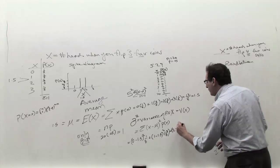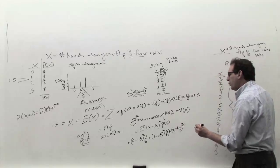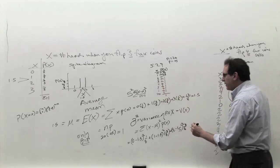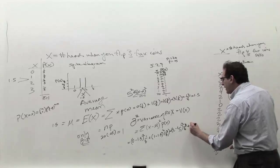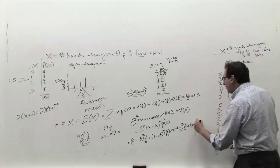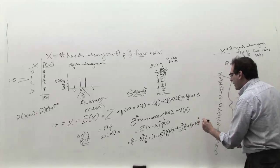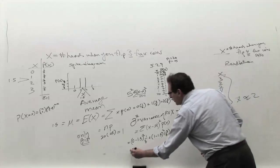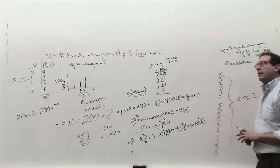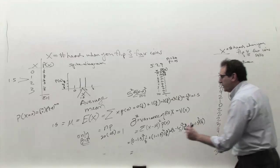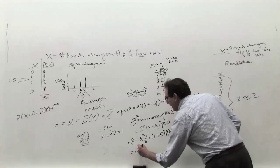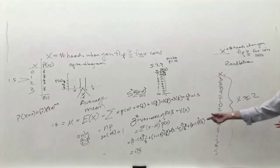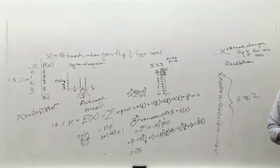And the same thing gets applied to 2 minus 1.5 squared times, again, 3 out of 8, because 2 shows up 3 out of 8 times. And finally, the last possibility is 3 minus 1.5 squared times 1 out of 8. And this whole thing will come out to 0.75. The reason why I know it's 0.75 is because I happen to have a shortcut that I'm going to be showing you in a second. But you can verify this on a calculator. It comes out to 0.75.